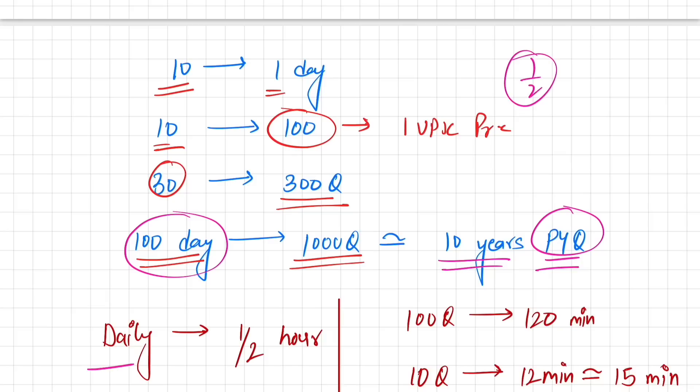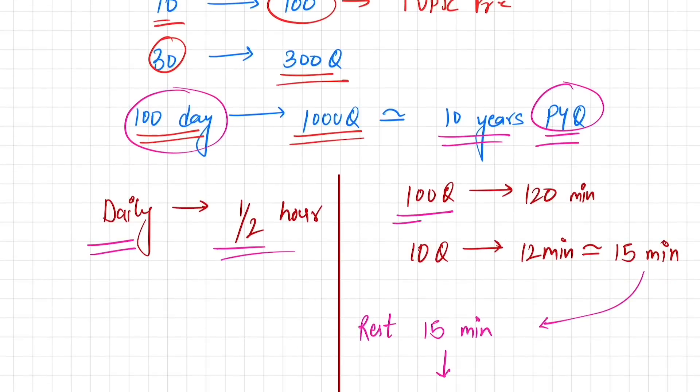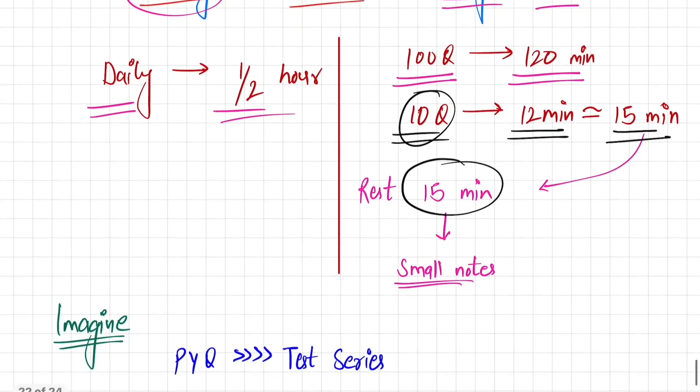Now how to divide your half hour daily? See, 100 questions come in the exam, for which you get 120 minutes. That means for 10 questions you'll take total 12 minutes. Approximately you can assume you'll do these 10 questions in 15 minutes. After that, the remaining 15 minutes, what do you have to do? For those questions, you have to prepare small notes.